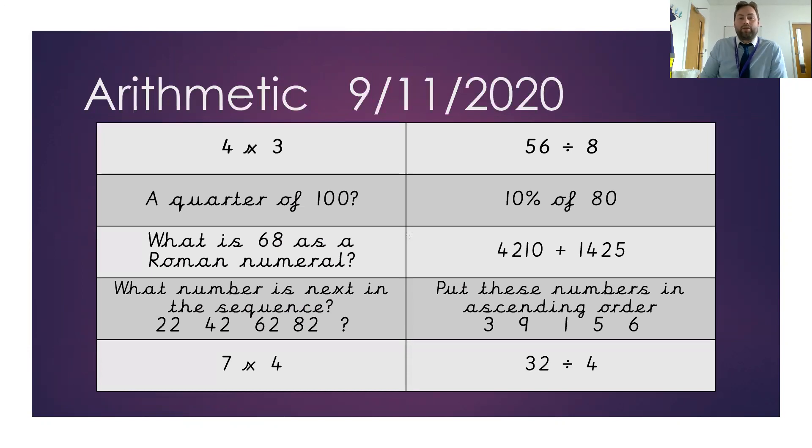Right, your arithmetic questions for the 9th of November. Here they are. You've got 4 times 3, a quarter of 100. What is 68 as a Roman numeral? We have a number sequence next. Can you please put the next number in? Then have 7 times 4. On the other side, we've got 56 divided by 8. Can you find 10% of 80? What's 4,210 plus 1,425? Then put the following numbers in ascending order. And then 32 divided by 4.